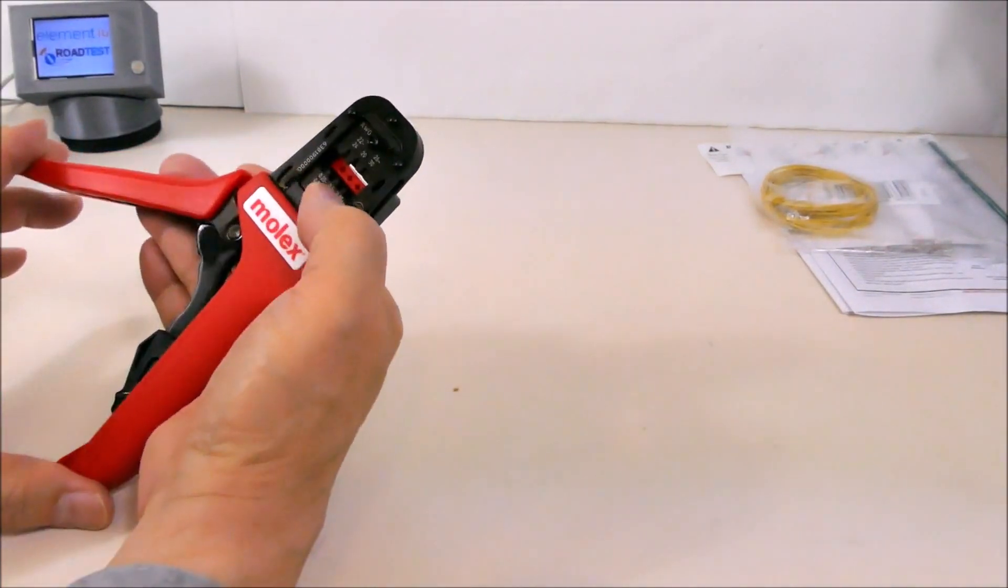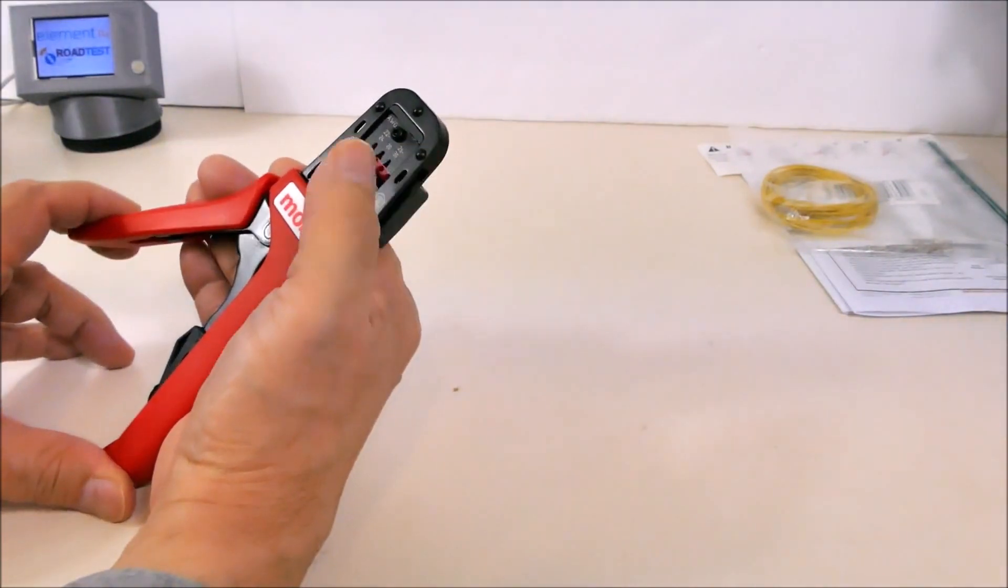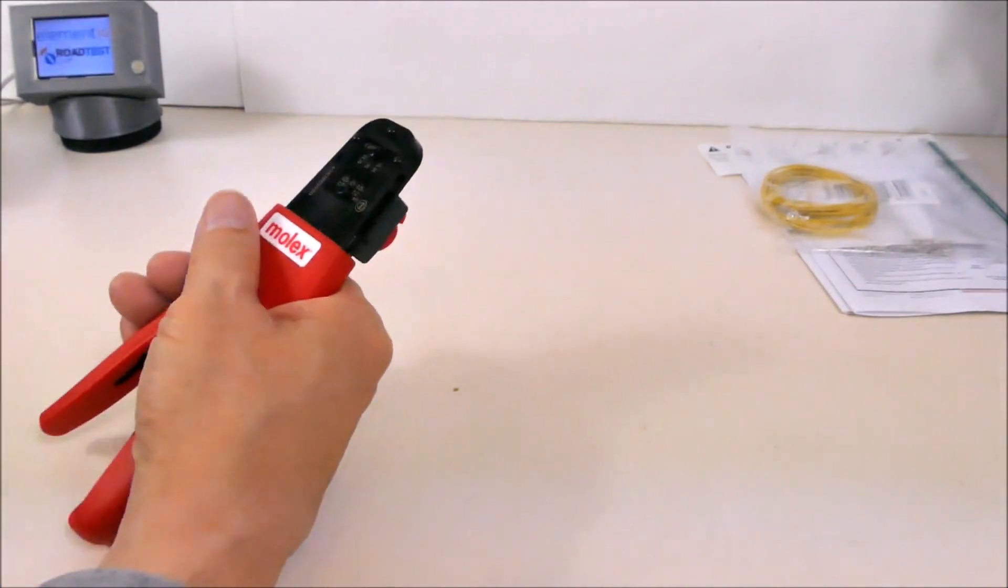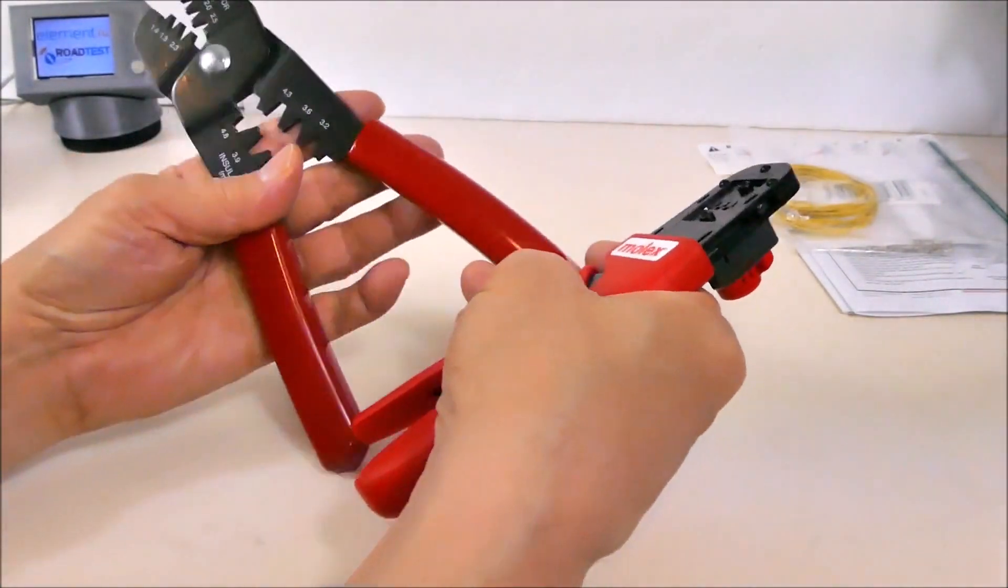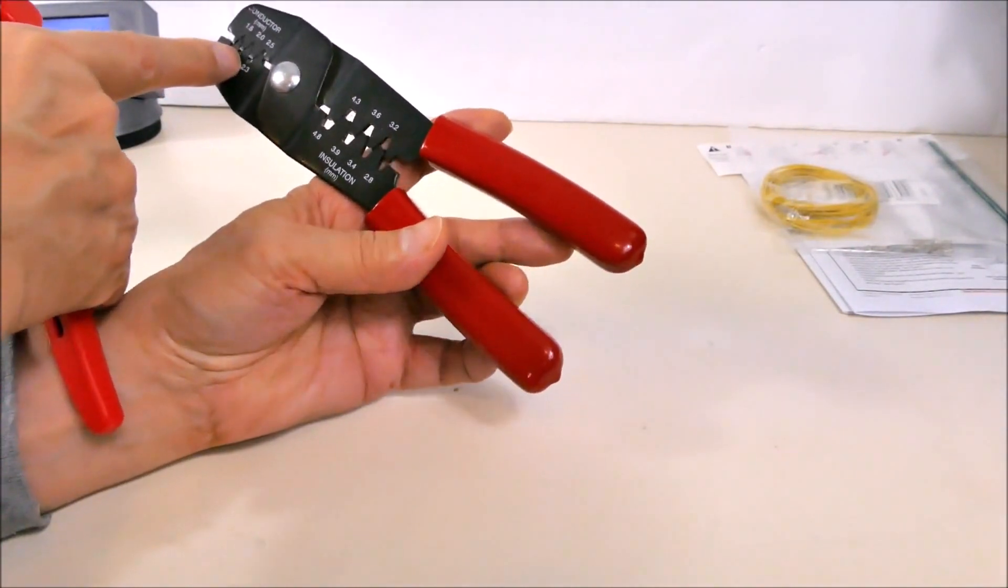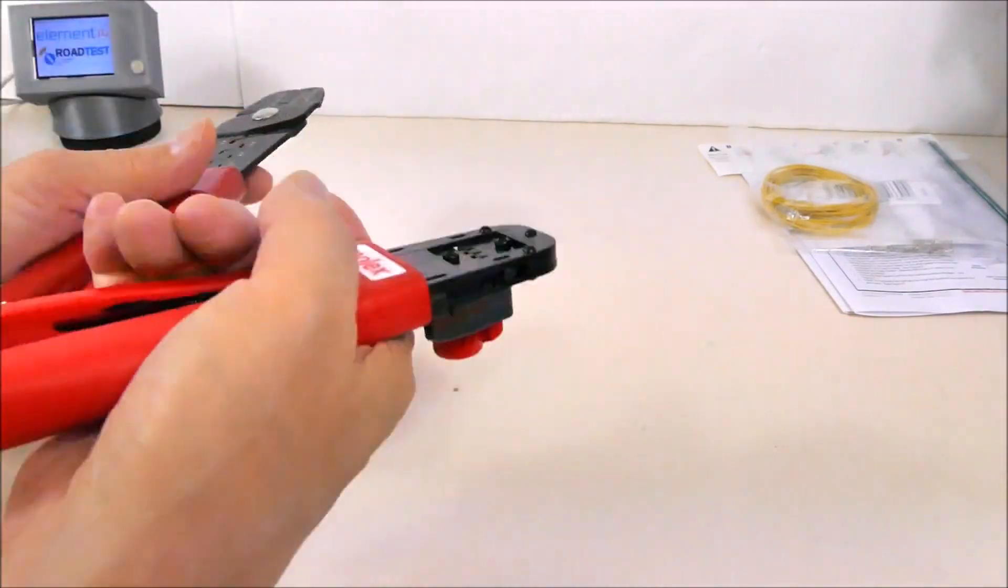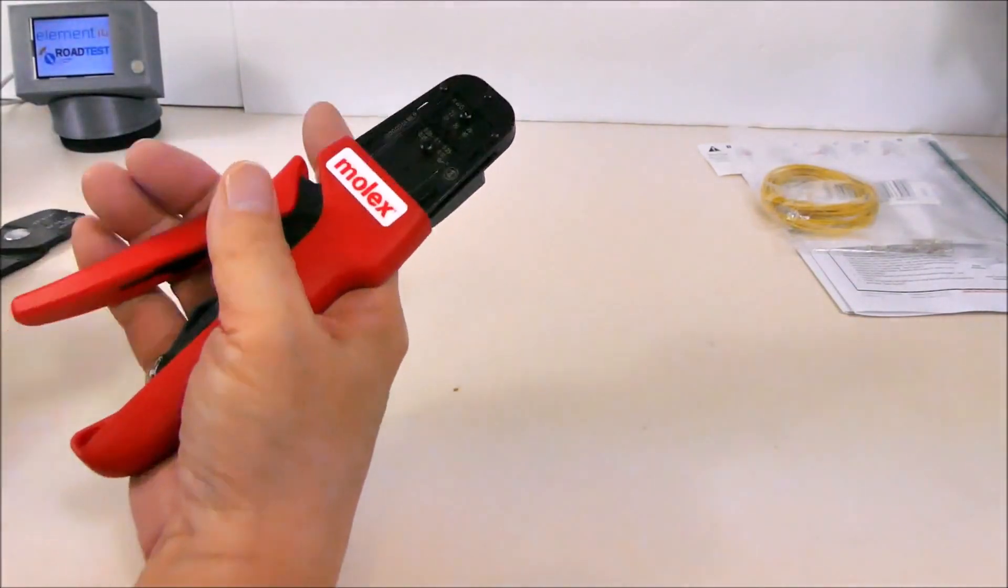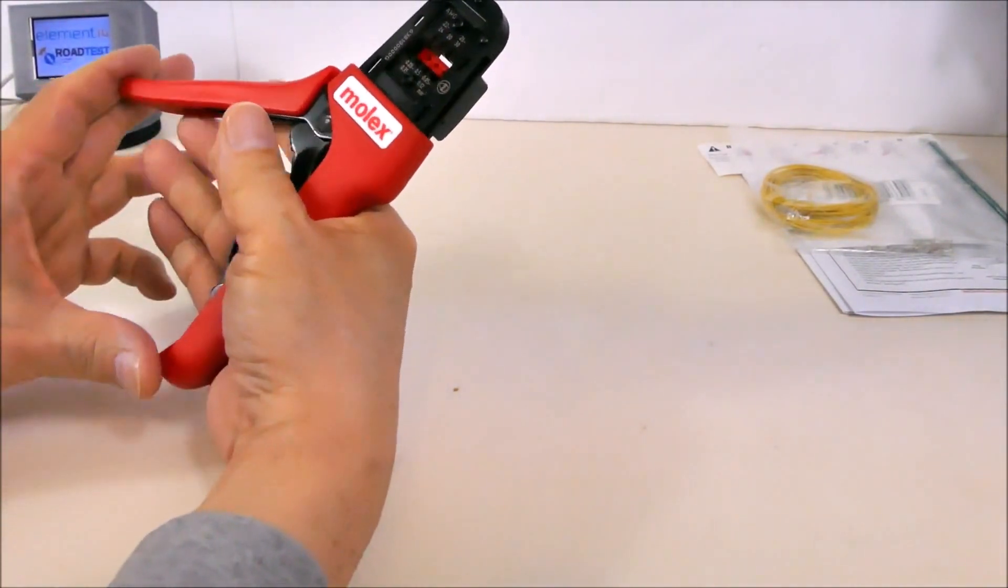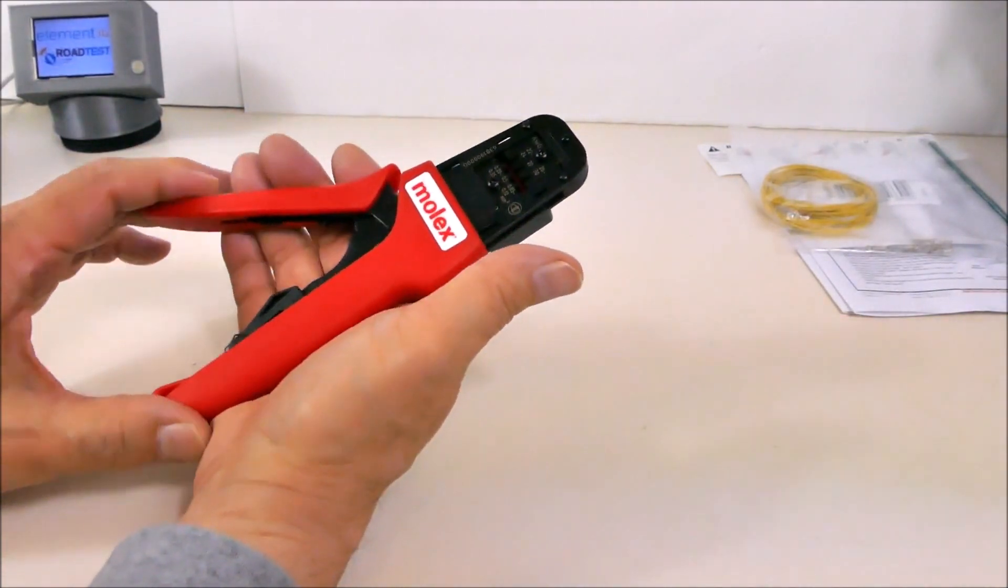The reason why linear motion on the jaws is so important is that it provides a uniform crimp on both sides of the connector. With these rotating ones, it's possible that one side gets a little bit different force than the other side because it's rotating as it's closing. Not a big difference, but this makes sure it's actually exactly the same on both sides and you get a uniform crimp on both sides of the connector.